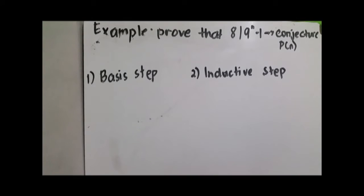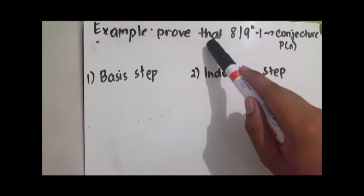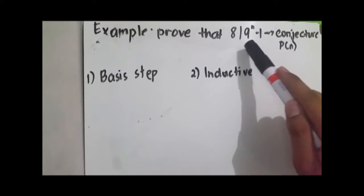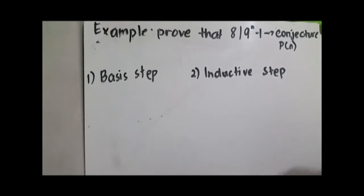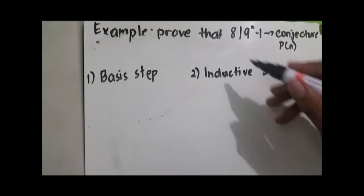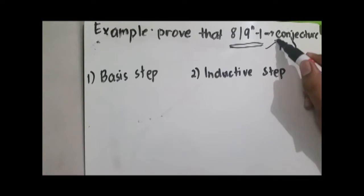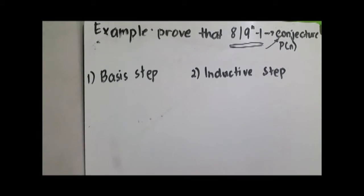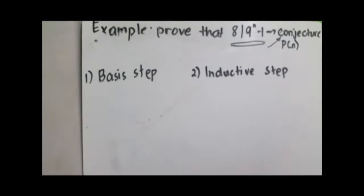Here is an example of a divisibility statement. Prove that 8 divides 9^n minus 1. This expression, 9^n minus 1, is what we call the conjecture or p(n). We need to prove that 9^n minus 1 is divisible by 8.